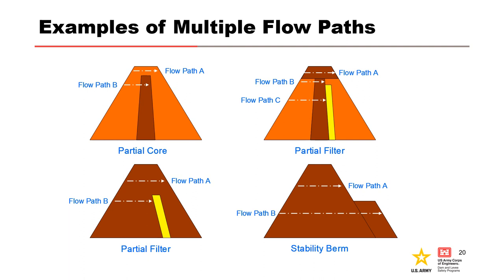At the bottom left, this is a homogeneous dam with a partial height inclined chimney filter. Flow path A is above the elevation of the filter and has an unfiltered exit for concentrated leak erosion at the downstream face. Flow path B has a filtered exit at the inclined chimney filter. At the top right, this dam has three design changes that must be considered. Flow path A has an unfiltered exit for concentrated leak erosion at the downstream face. Flow path B is concentrated leak erosion through the thin impervious core, but the pervious shell may or may not provide a filtered exit. If the pervious shell has excessive fines, common cause cracking may occur, resulting in an unfiltered exit at the downstream face. Flow path C is concentrated leak erosion through the thin impervious core and has a filtered exit at the inclined chimney filter.